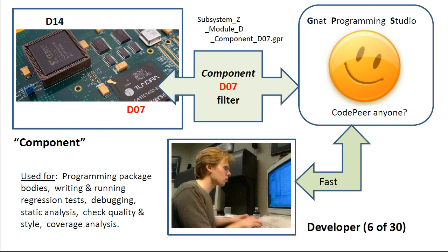At the component level, the amount of code to be processed by the development environment is small enough to allow the workstation to react quickly to commands that invoke powerful tools — such as CodePeer to obtain an analysis of a new subprogram, or AUnit to determine if a regression has occurred, GANAT check to verify conformance to specific coding rules, GANAT coverage to expose any untested code segments, and the visual debugger to trace the flow of processing to the cause of a problem. When you're programming, the component level is the place to be.